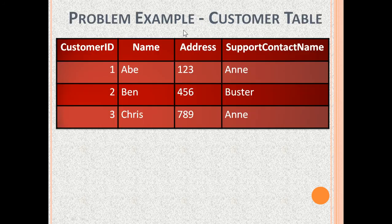Now let us see examples that are not in the first normal form. This is the customer table. Its columns are customer ID, name, address, and support contact name. The problem is that support contact does not belong to the customer table. This gives rise to issues — for example, if a customer row is deleted, the support contact data also gets deleted.